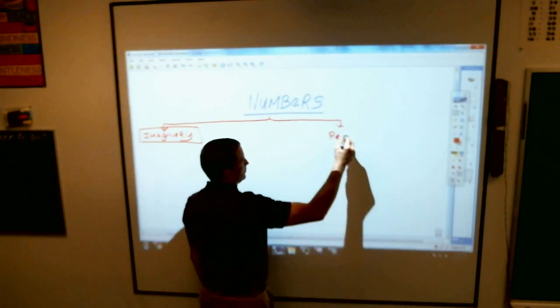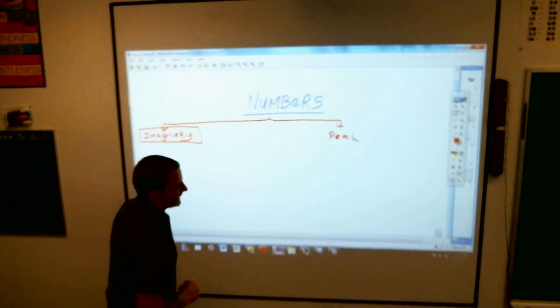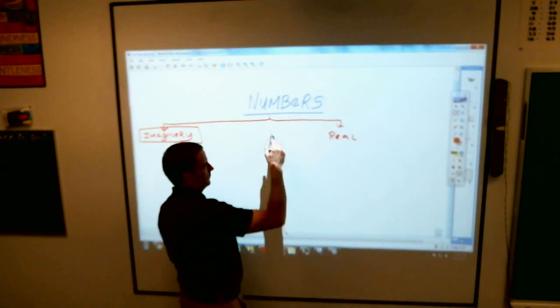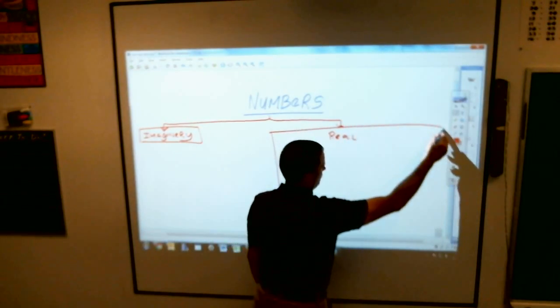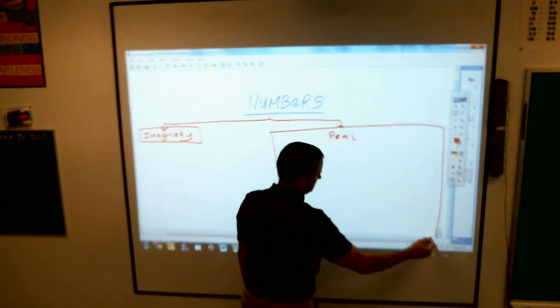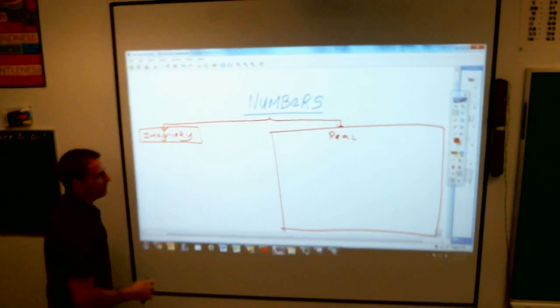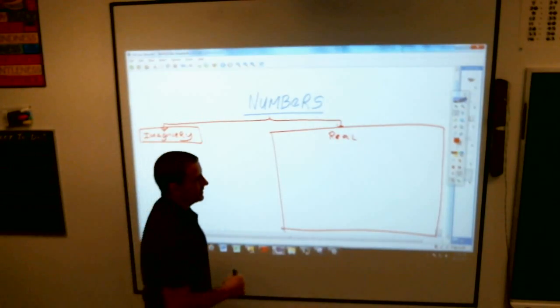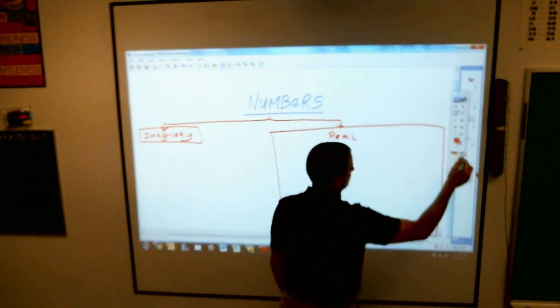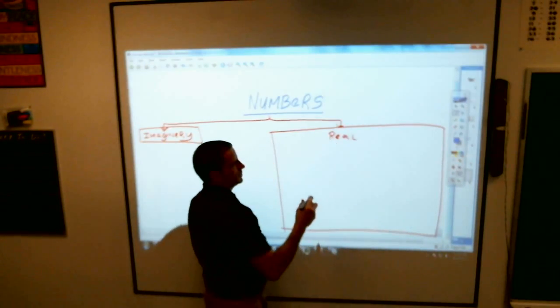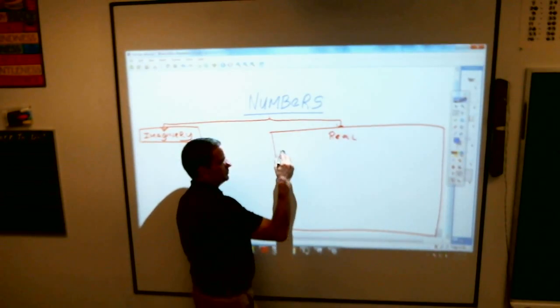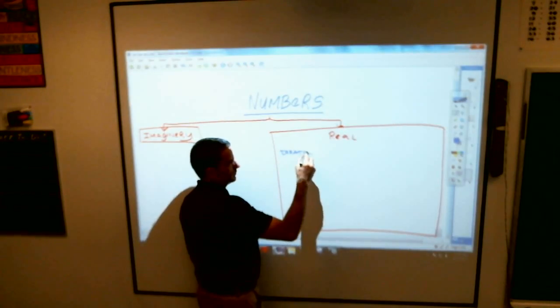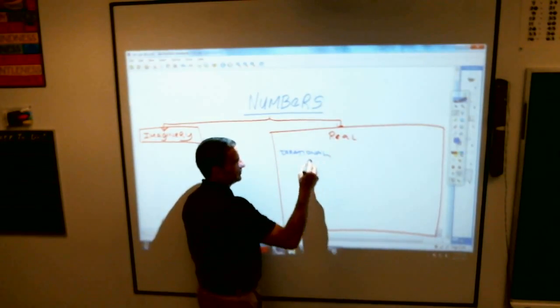Pretty much everything you know is a real number. A big old box that holds all the real numbers, everything I write in this box is a real number. Now inside that box of real numbers we have what are called rational and irrational numbers. You need to remember this from before. Did we talk about this before?